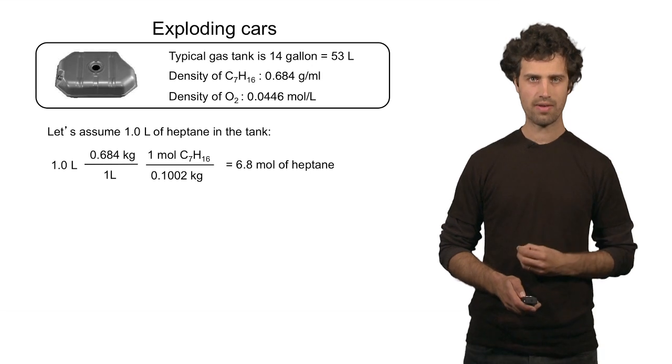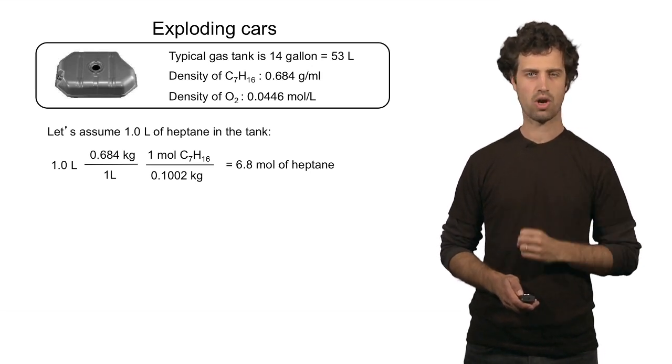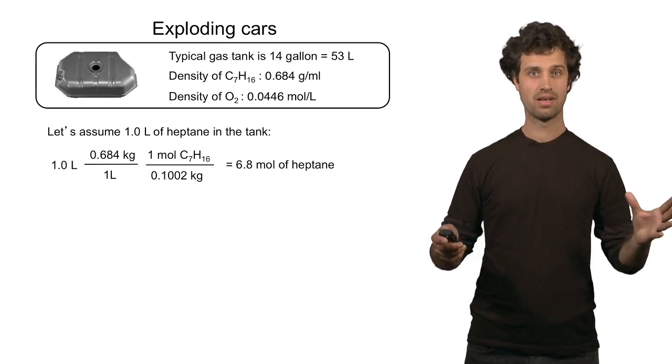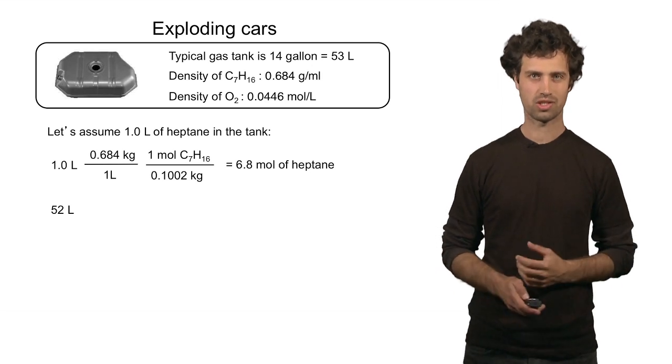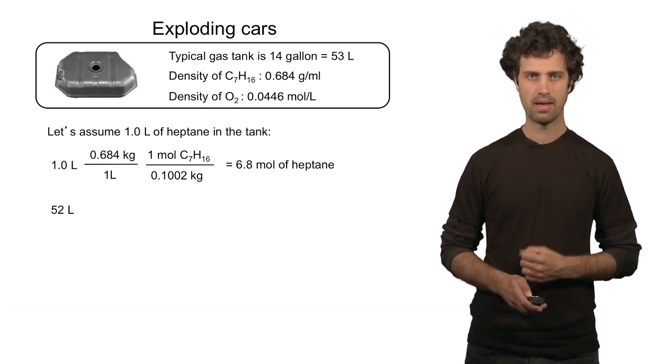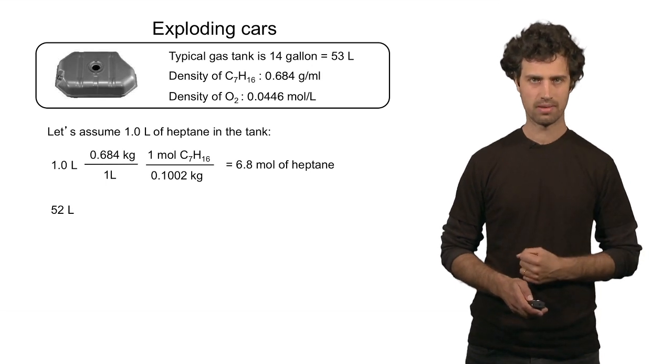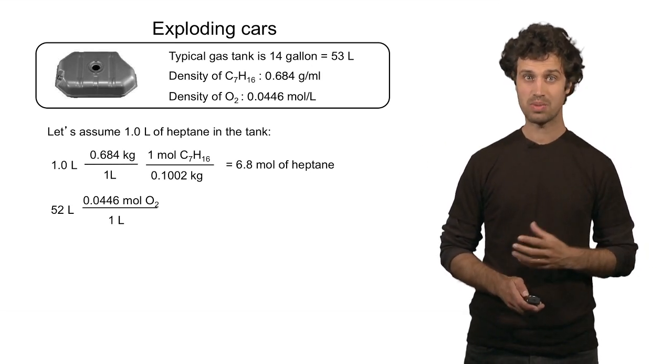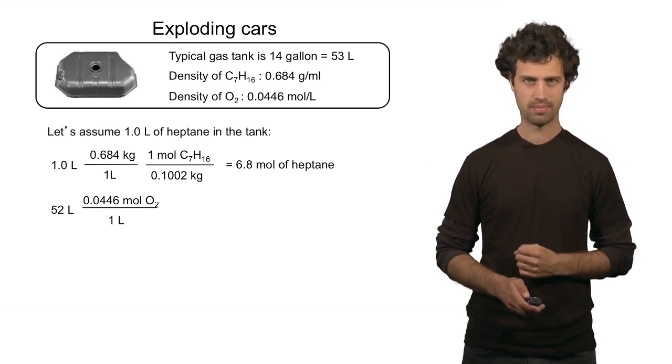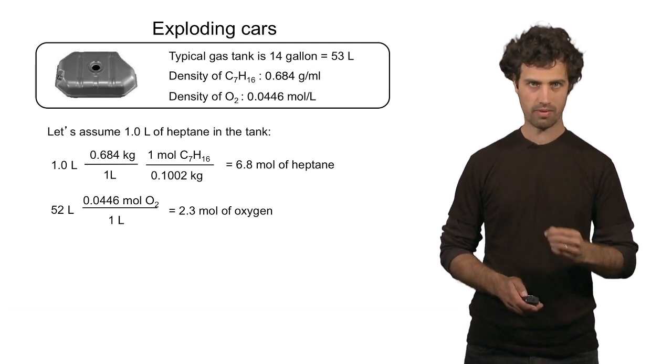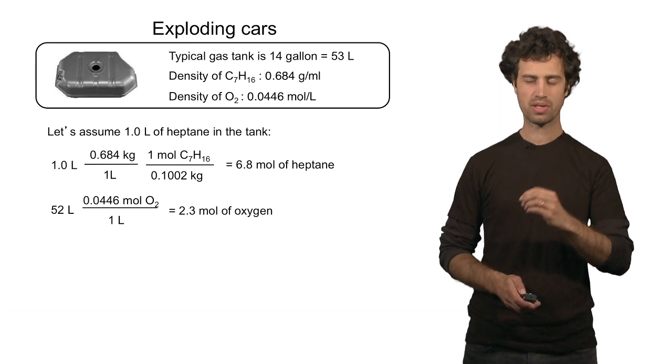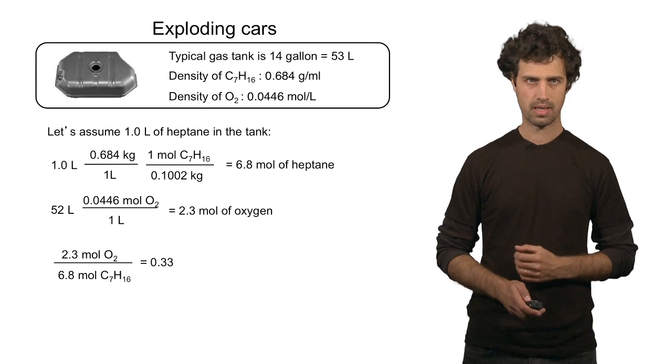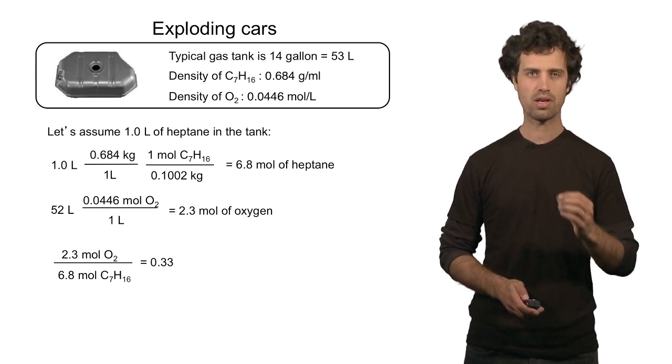How many moles of oxygen do I have in this case? 1 liter was occupied by heptane. That means 53 minus 1 is 52 liters is left for oxygen. So I have 52 liters of oxygen. How many moles of oxygen is that? I multiply by the density. Look at the units right here. This multiplication gives me moles immediately. I find 2.3 moles of oxygen. So I have 6.8 moles of heptane, 2.3 moles of oxygen. What is the ratio between the two? That is 2.3 divided by 6.8, and that is 0.33.